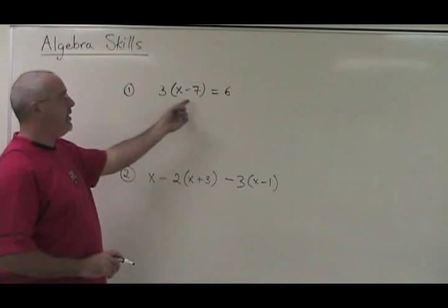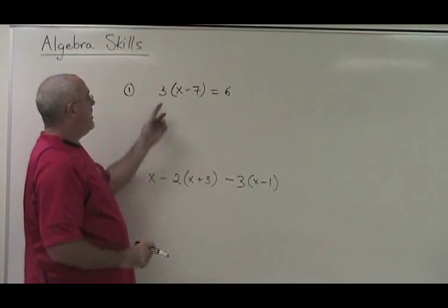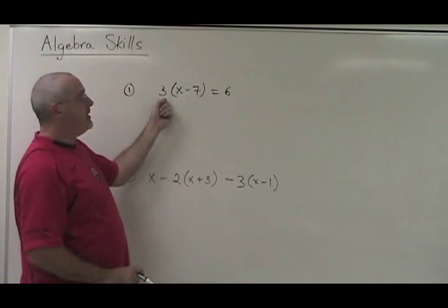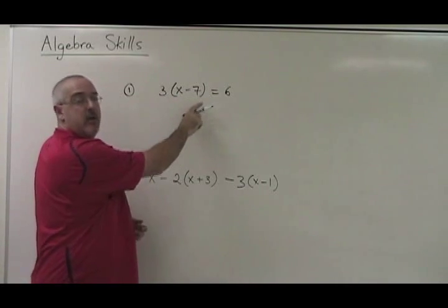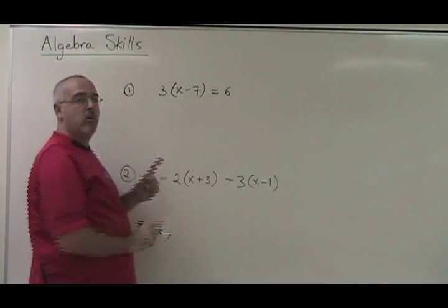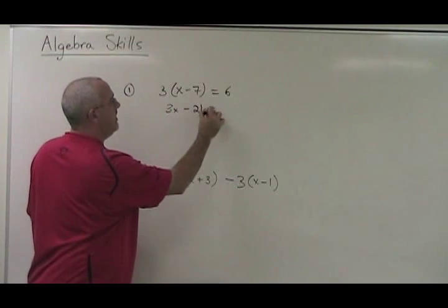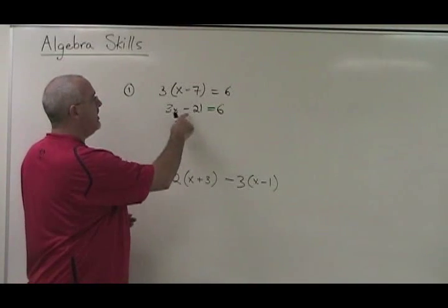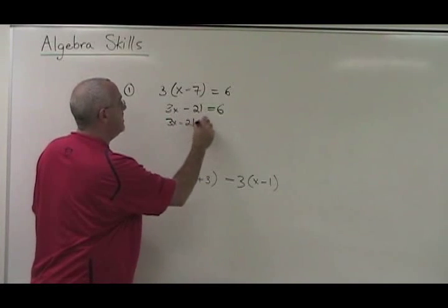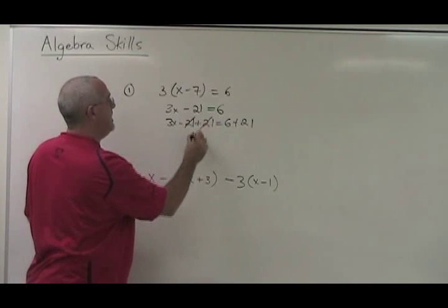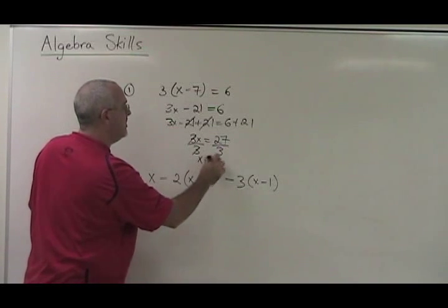The next special case we deal with is brackets. What do you do when you have a bracket inside the algebraic expression you're trying to simplify? For example: 3 open bracket x minus 7 equals 6. This means you're multiplying, but not just multiplying the 3 by the x — you have to multiply the 3 by the whole bracket, by each thing inside, one by one. 3 times x is 3x, and 3 times negative 7 is negative 21. Now, we want to get this minus 21 away from the x, so: 3x minus 21 plus 21 equals 6 plus 21. These cancel, giving 3x equals 27. Divide both sides by 3, and x equals 9. You have your answer.